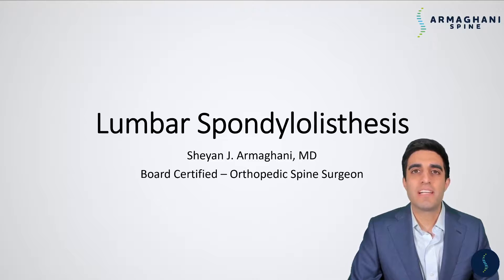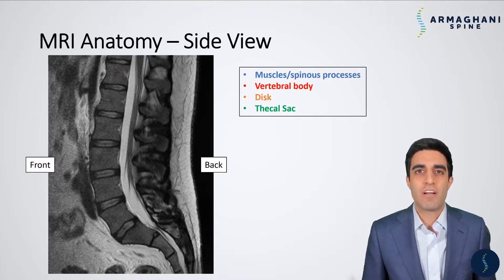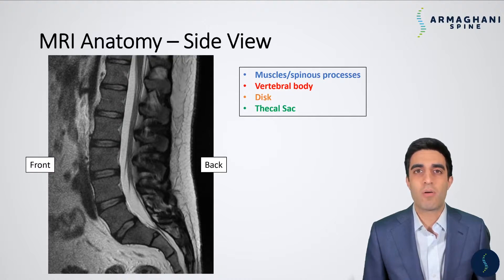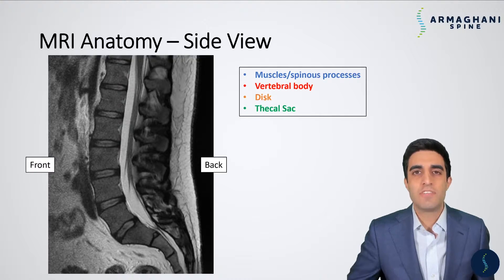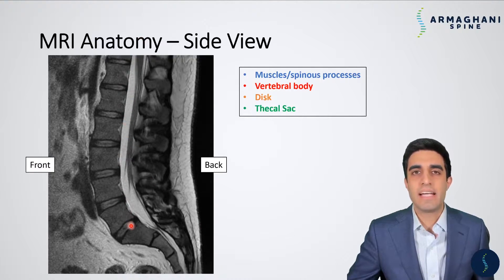Now let's begin our discussion on lumbar spondylolisthesis. Before we get started on this particular condition, we need a better understanding of what the normal MRI anatomy is of the lumbar spine. Frequently, patients come in already with an MRI, so let's take a look at some of these anatomic landmarks. You're going to see a normal MRI of your low back, and this is a side view.